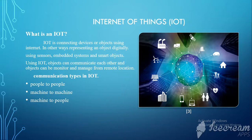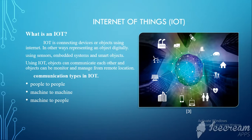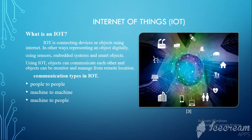Using IoT, objects can communicate with each other without the help of humans, and objects can be monitored and managed remotely. There are some communication types in IoT: people to people, machine to machine, and machine to people.